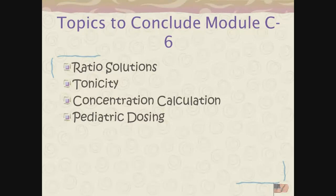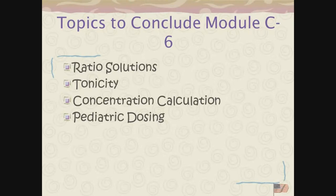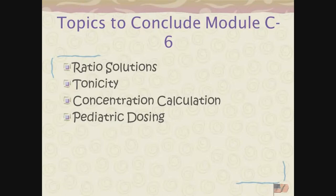We talked about weight-volume calculations and using the universal drug calculation. We need to talk about ratio solutions because they're a little bit different. Talk about tonicity, and talk about another formula — because there's no math in respiratory.